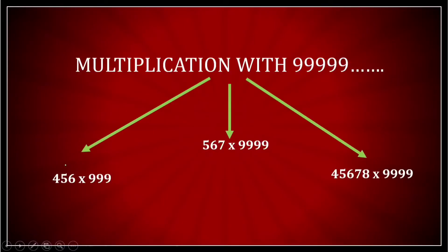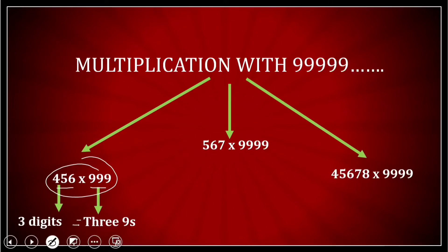The first type was this one. How many digits are here? There are three digits here and there are three digits here, right? That means the number of 9s that are there and the number of digits over here, they are coming out to be equal.